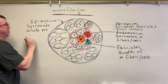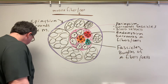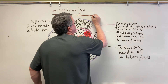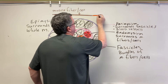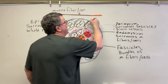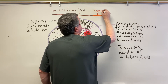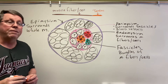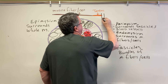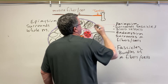The 'epi' surrounds the whole muscle. Now at the end of the muscle, all the muscle fibers come together and they attach to something made of collagen — we call that a tendon. My tendon then attaches onto a bone.